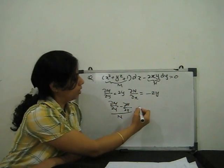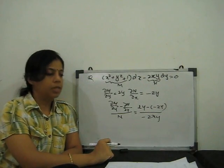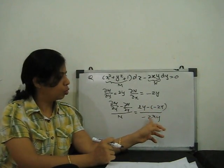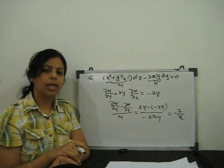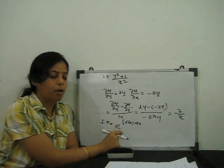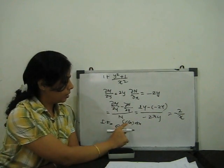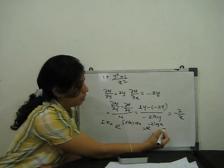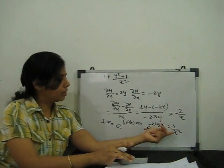Computing: 2y - (-2y) divided by -2xy gives 4y / (-2xy) = -2/x. This is a function of x only. So our integrating factor is e to the power ∫(-2/x) dx = e^(-2 ln x) = x^(-2) = 1/x². The integrating factor is 1/x².